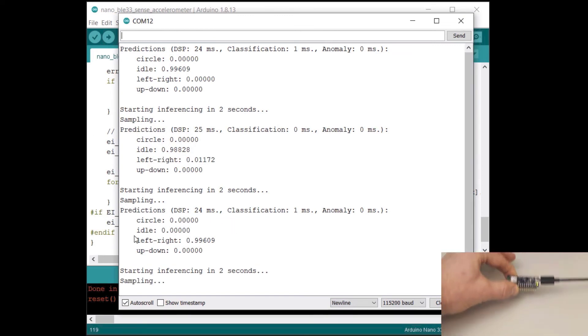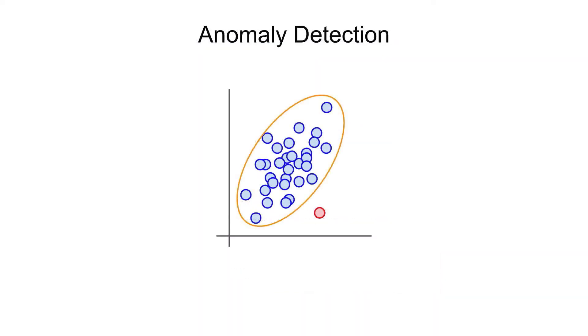Finally, we looked at anomaly detection, how it's accomplished in the context of machine learning, and how it can be used to solve problems, especially with embedded systems.